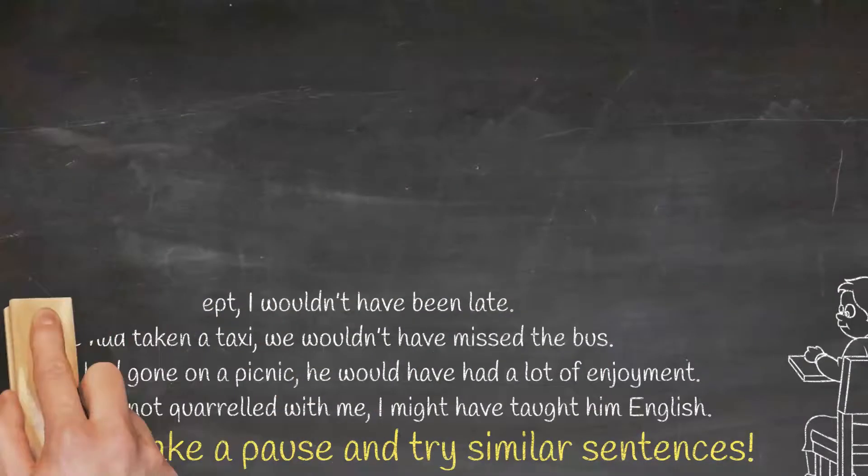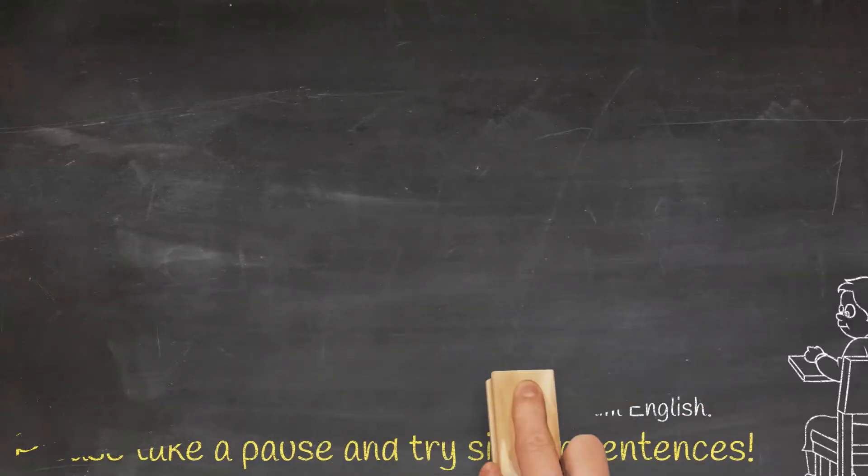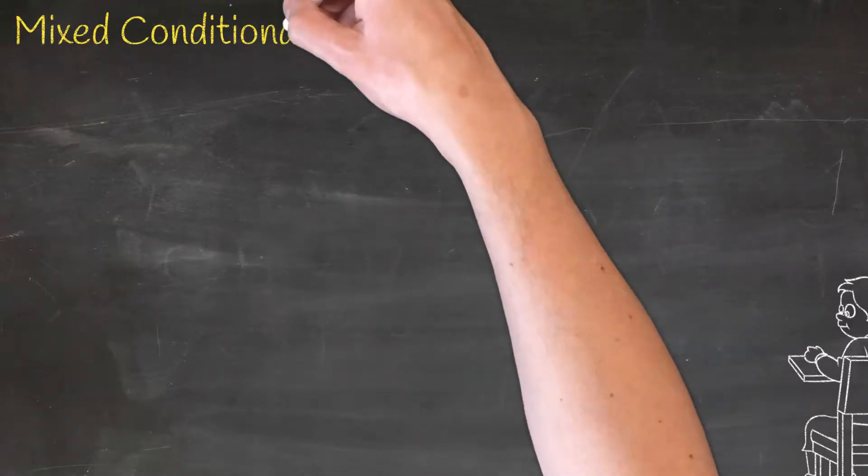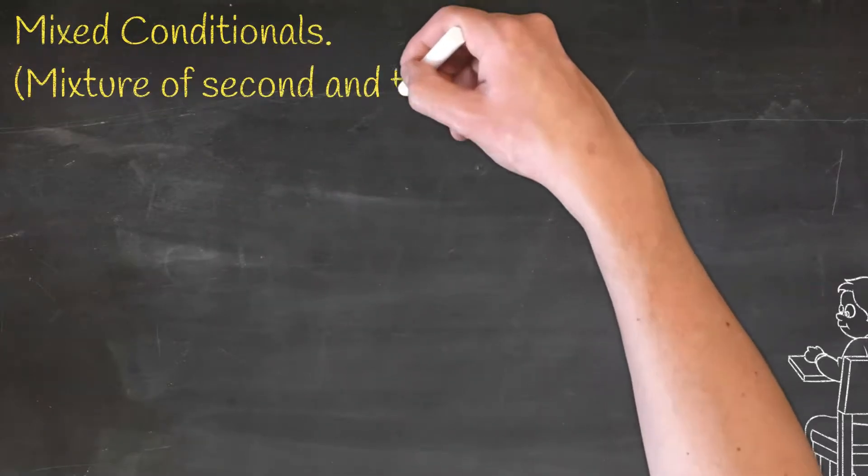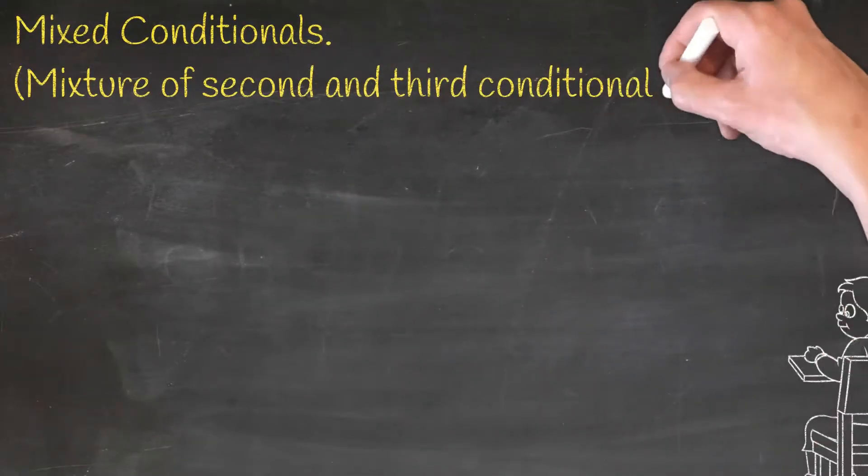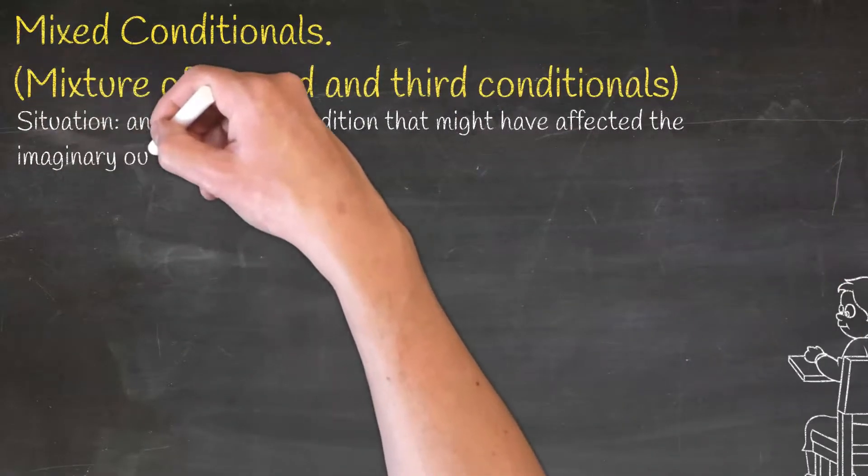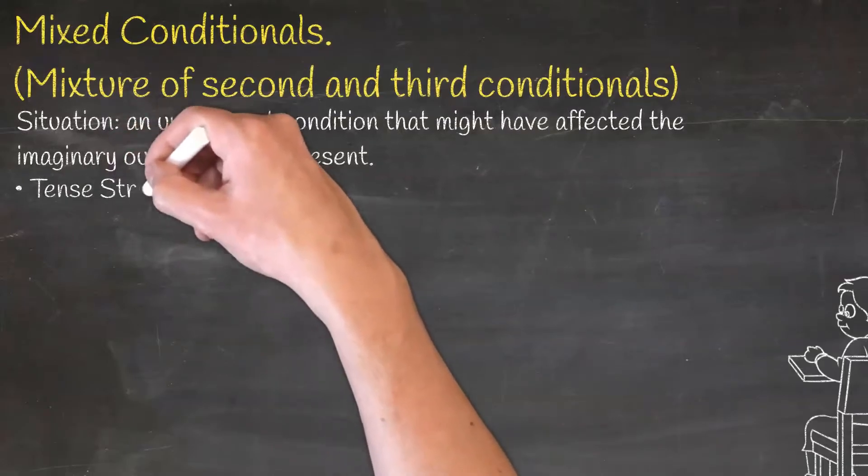Please try similar examples. We use mixed conditionals to express an unreal situation in the past that might have affected an imaginary outcome in the present. Let us see how it works.